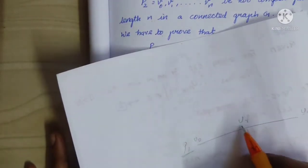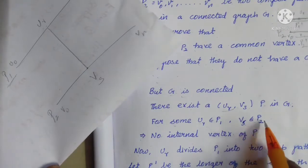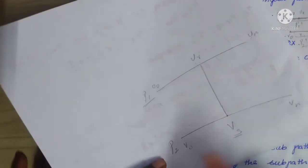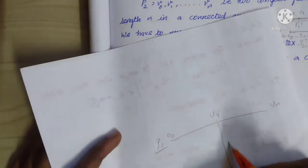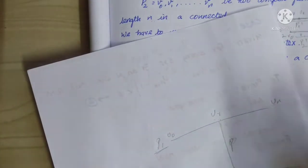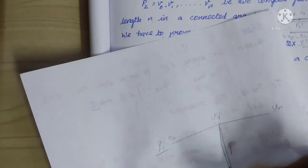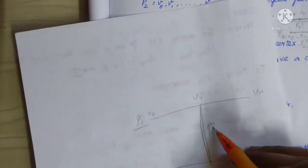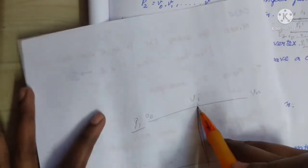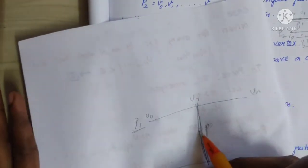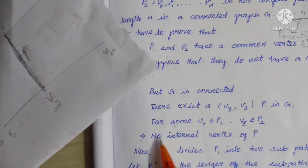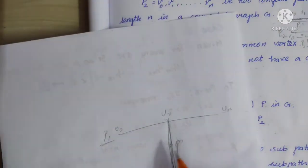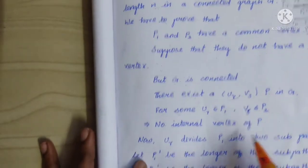Ur belongs to P1 and Vs belongs to P2. No internal vertex of P lies in P1 or in P2. There are no internal vertices of P in P1 or P2. So Ur and Vs are the endpoints connecting P1 and P2 through path P, with no internal vertices of P belonging to P1 or P2.